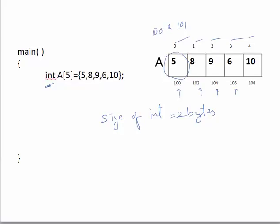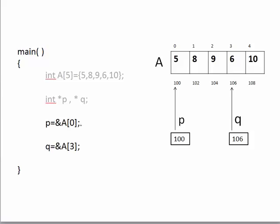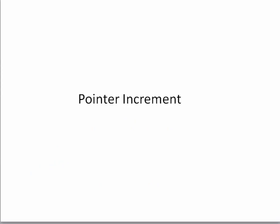Here I take two pointers P and Q. I assign P as ampersand a[0] so address 100 is stored in P, and Q is assigned ampersand a[3] so address 106 is stored in Q. This initialization can also be written as P = a, or P = &a[0] — all three give the same meaning.